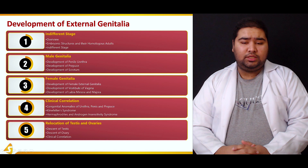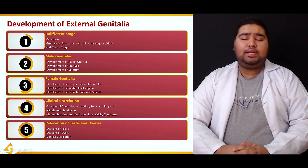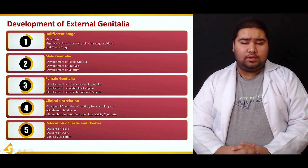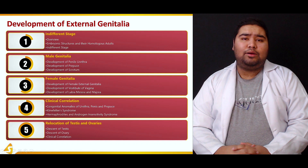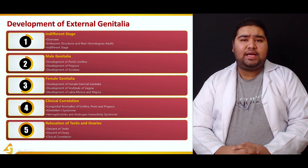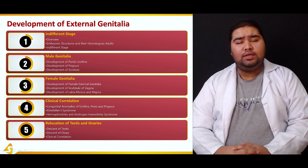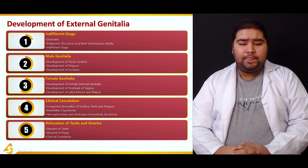In the fourth section, we'll see the clinical correlation — what happens when either the development or the influence of the hormones is absent, and what developmental defects may occur in the embryo with regards to the development of the reproductive system.